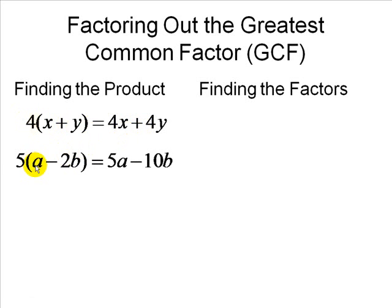Here we have two factors, 5 and a minus 2b. So we distribute again 5 throughout these two terms. 5 times a is 5a, 5 times minus 2b equals minus 10b.